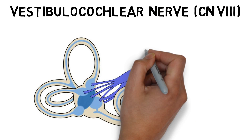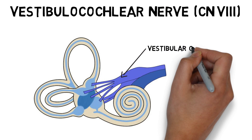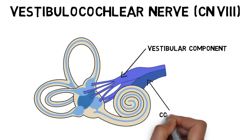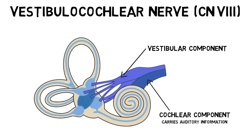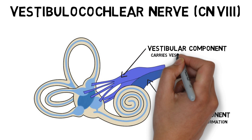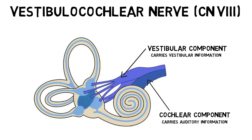The vestibulocochlear nerve consists of a vestibular and cochlear component, which have the functions of carrying information to the brain from the vestibular system and the cochlea, respectively. The information from the cochlea deals with hearing, while the information from the vestibular system deals with vestibular sensations, which include information about head position and movement.